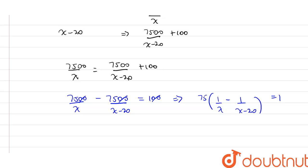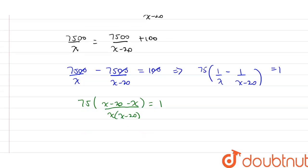...we get 75 times 1 upon x minus 1 upon x-20 is equal to 1. That is 75 times x-20 divided by x times x-20 is equal to 1.